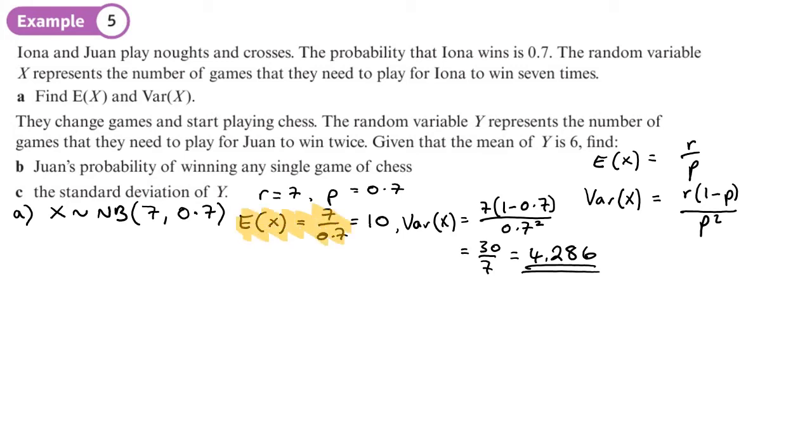Okay, now just before part b and c, there's some extra information. They change games and start playing chess. The random variable Y represents the number of games they need to play for Juan to win twice. Given that the mean of Y is 6, find Juan's probability of winning any single game of chess.